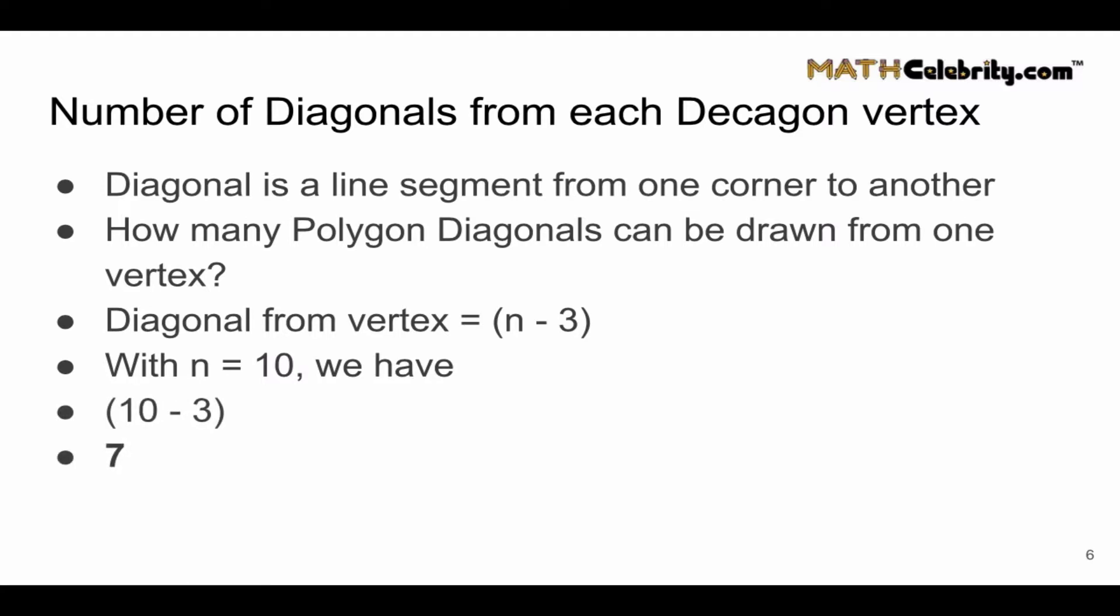So for any one Decagon vertex, we can draw 7 diagonals.